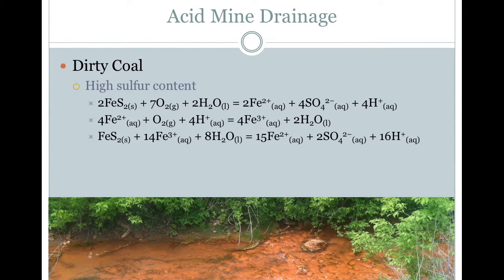Acid mine drainage is a consequence of the geology in southeastern Ohio. This part of the state has coal with a high concentration of sulfur compounds, such as pyrite, or fool's gold. Iron sulfide — fool's gold — interacts with oxygen and water to yield iron(II), sulfate, and hydrogen ions.